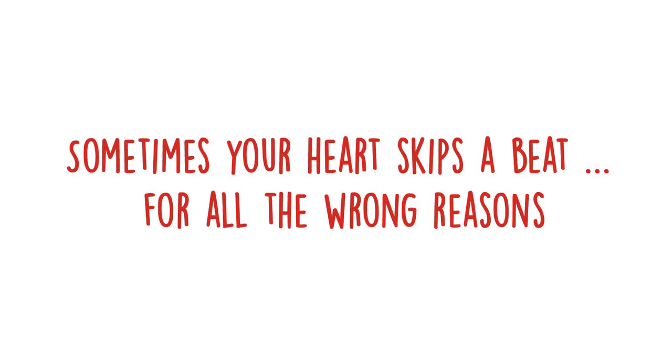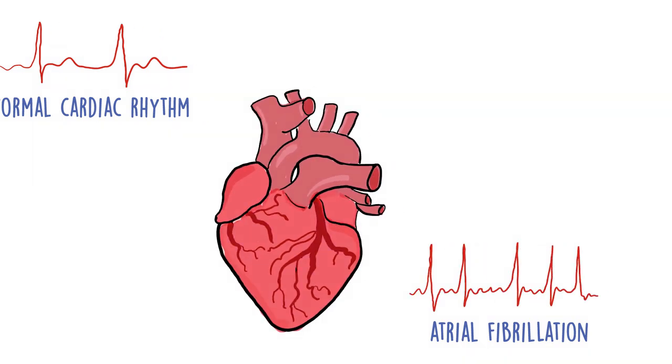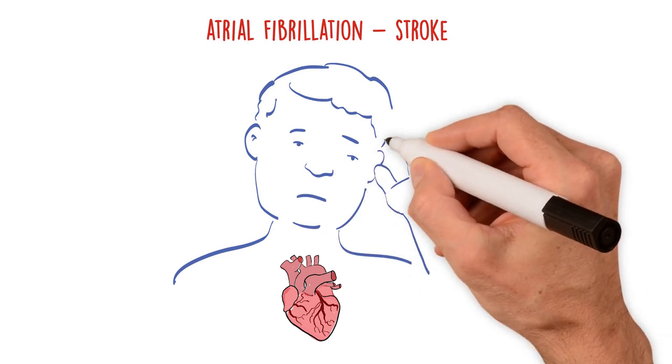Sometimes your heart skips a beat for all the wrong reasons. Atrial fibrillation or AF is a condition where the heartbeat is irregular and often very fast. If it's untreated, AF is a major risk factor for stroke.